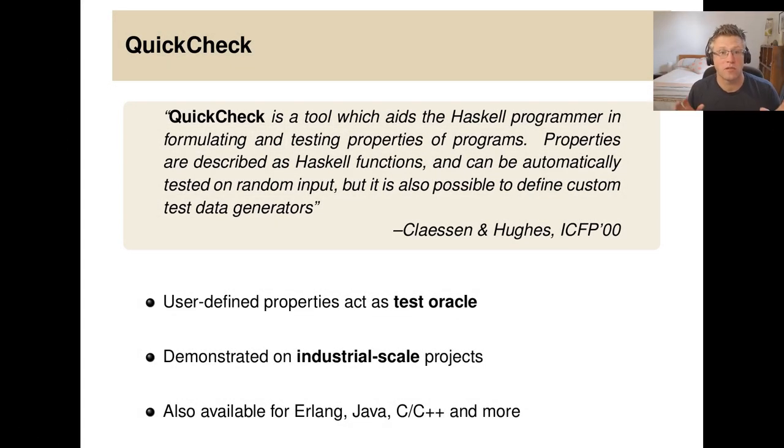The starting point for thinking about this project is the QuickCheck tool. For those that don't know, QuickCheck is an automatic testing tool which has been widely used in academia and industry. Here's an excerpt from the original ICFP 2000 paper by Klassen and Hughes. QuickCheck is a tool which aids the Haskell programmer in formulating and testing properties of programs. Properties are described as Haskell functions and can be automatically tested on random input, but it's also possible to define custom test data generators.